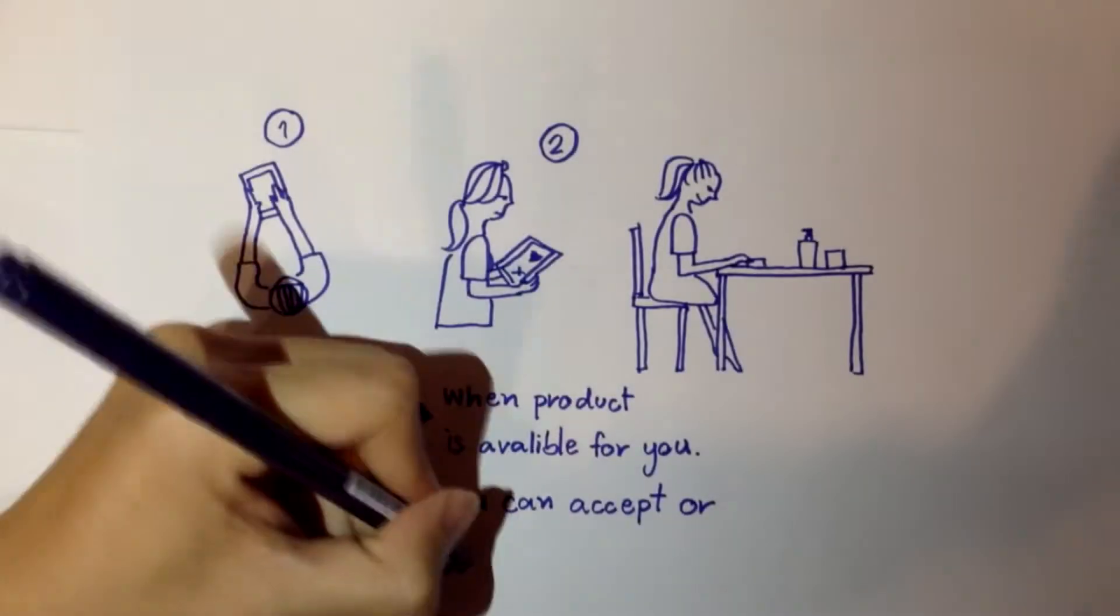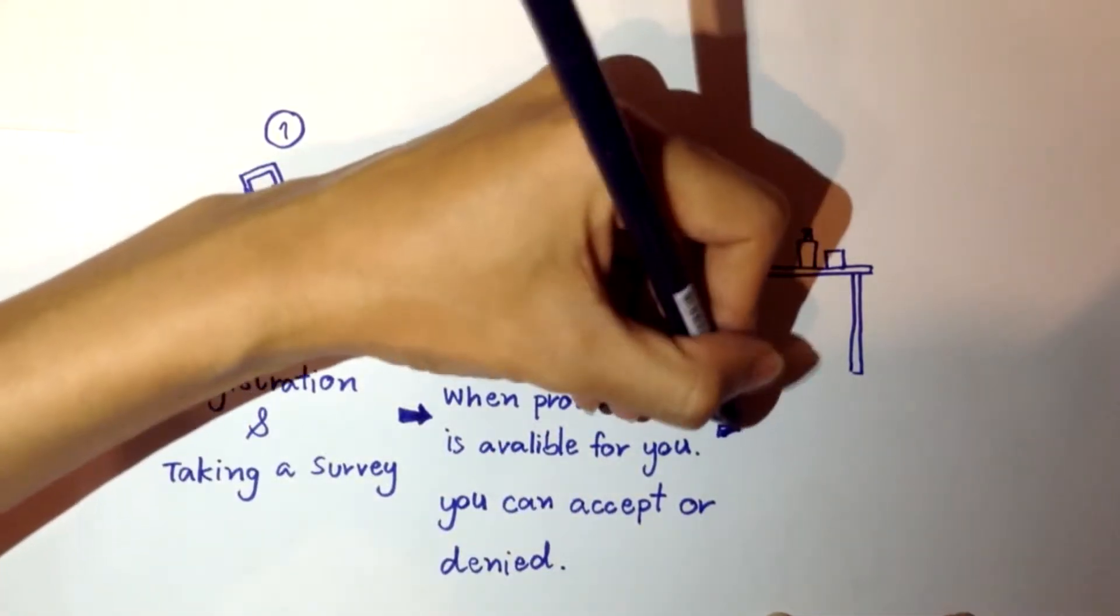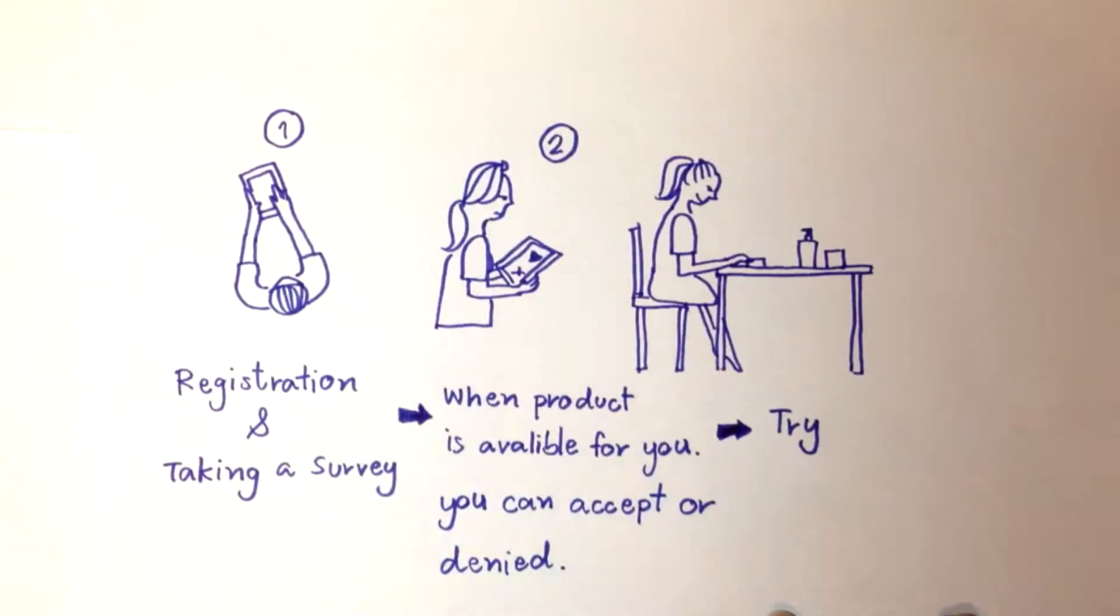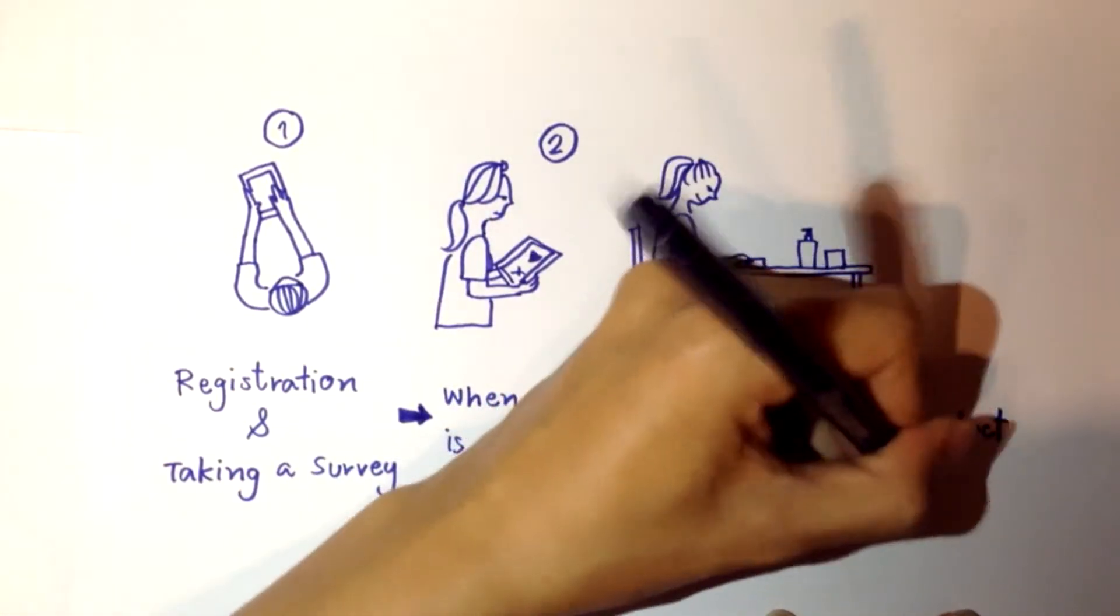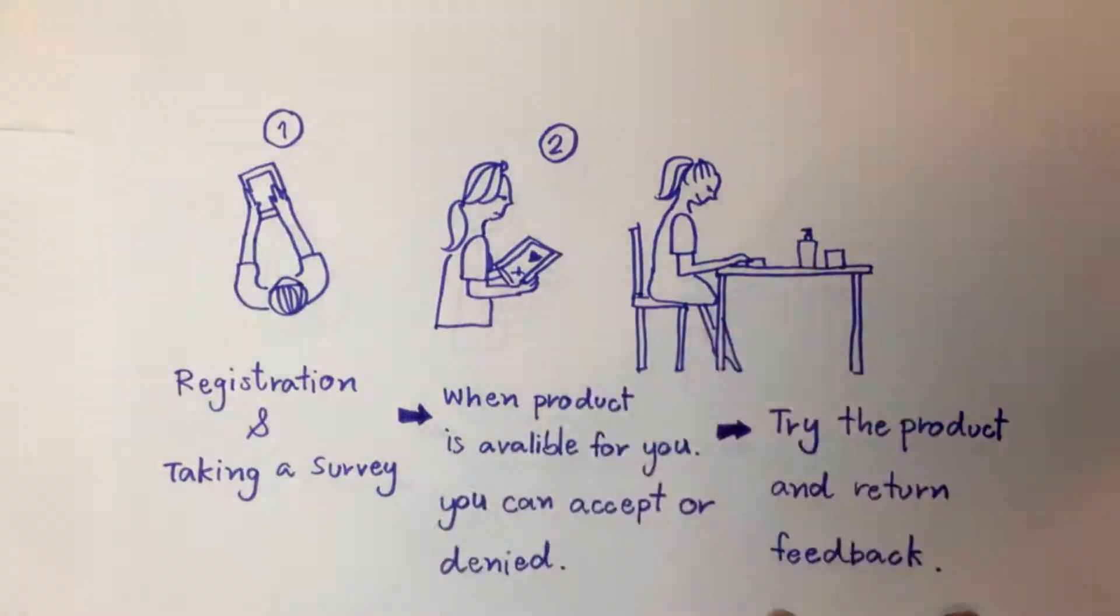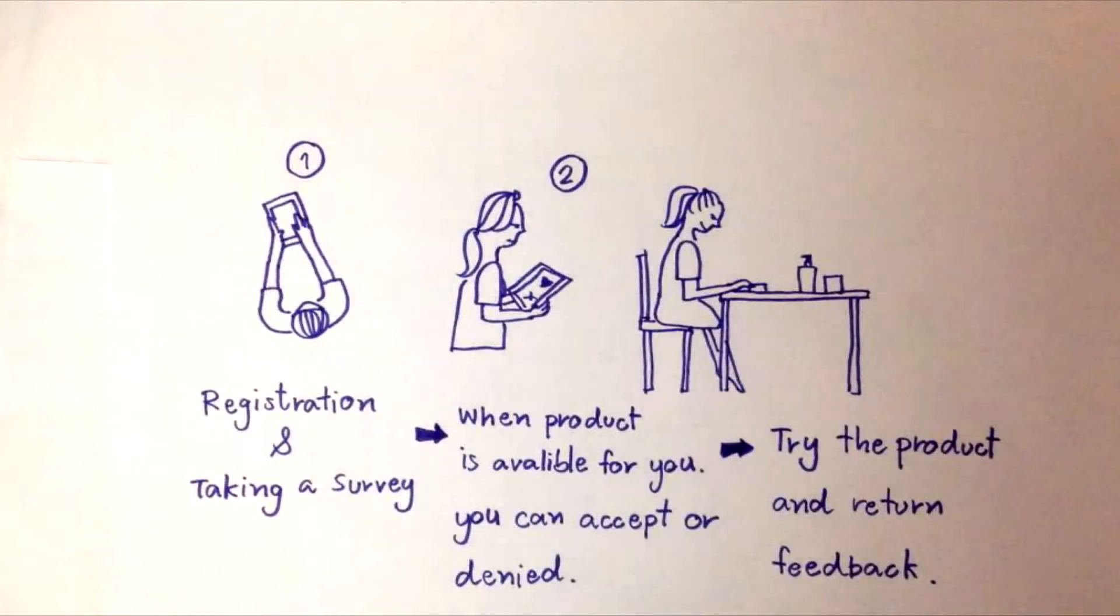With only these three simple processes: first, register and tell us about your lifestyle; second, choose the product you like; and third, try and tell Santa whether you like or dislike it to get other products in the next round.